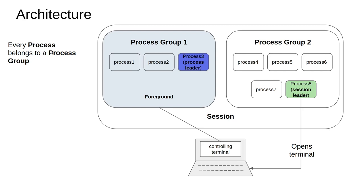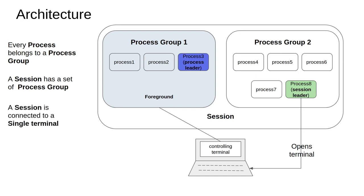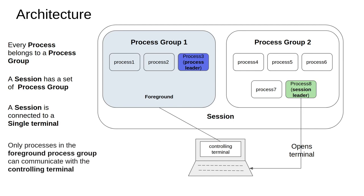So the catch here is: every process belongs to a process group; a session has a set of process groups; a session is connected to a single terminal; and only processes in the foreground process group can communicate with the controlling terminal. These are the four things one has to understand before trying to understand how Shim and RunC actually works.